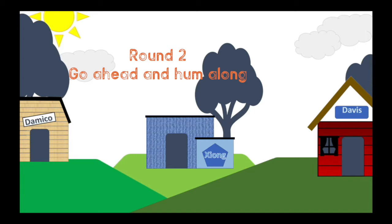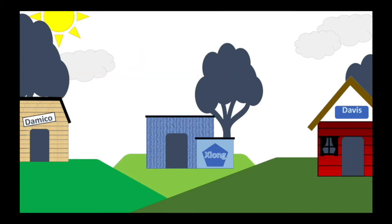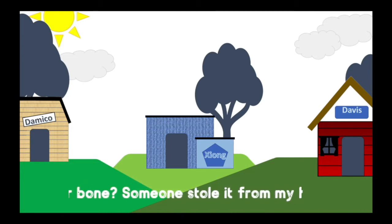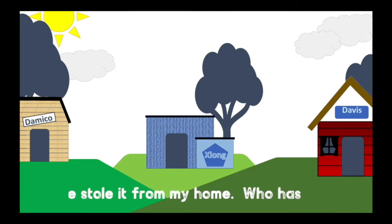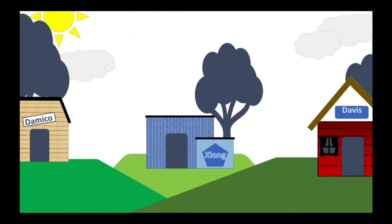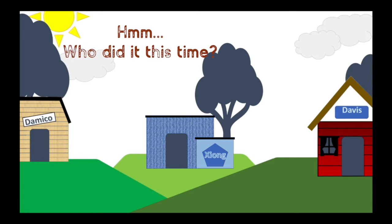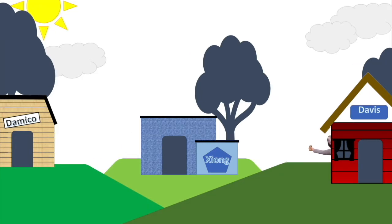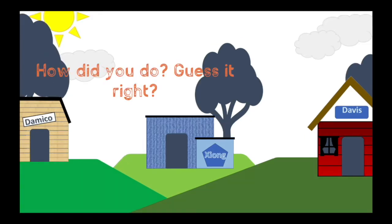Go ahead and hum along. Doggy Doggy, where's your bone? Someone stole it from my home. Who has the bone? I have the bone. Hmm, who did it this time? Point at their doghouse. Let's see if you're right. I have the bone. How did you do? Did you guess it right?